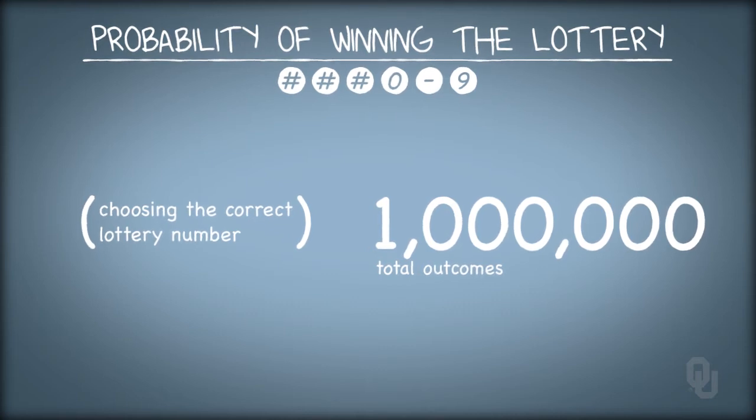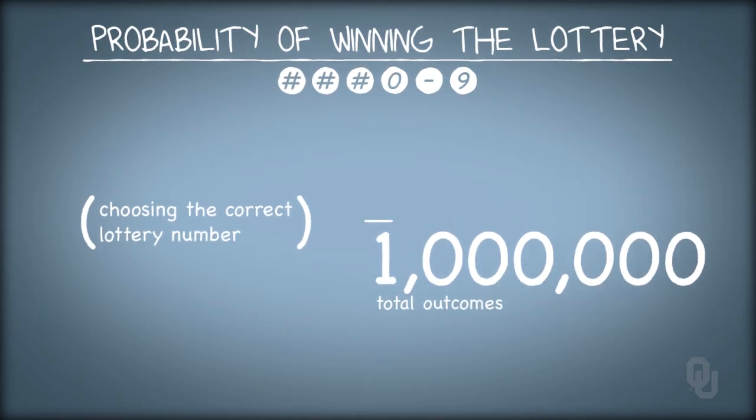If the lottery picks six numbers 0 to 9 at random, there's only one way to pick that winning lottery ticket. That is, there's only one way for event A to occur. The probability of A is then 1 out of 1 million.